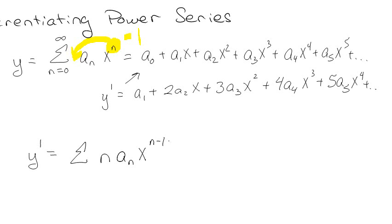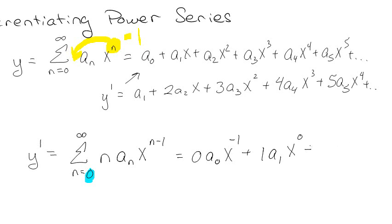Notice that I left the summation limits off. I know it goes from n equals something to infinity, and my initial instinct is to put it at 0, but I'm not sure if that's right. When n equals 0, I get 0 times a-naught times x to the negative 1 — that's 0, which is fine. Then n equals 1 gives a1 times x to the 0, which matches. And n equals 2 gives 2a2 times x to the 1. So this is actually looking pretty good — the a1 and a2 terms are correct.